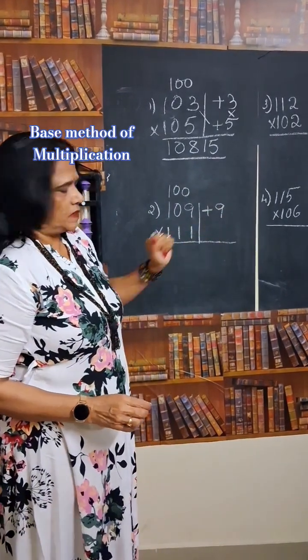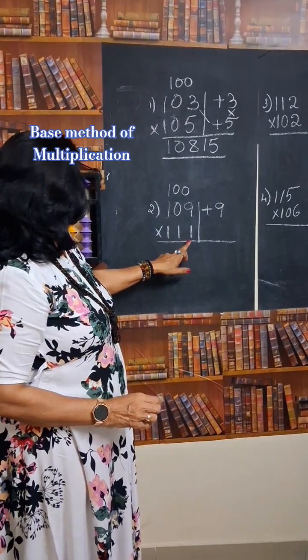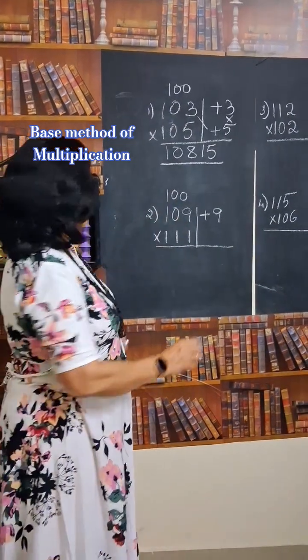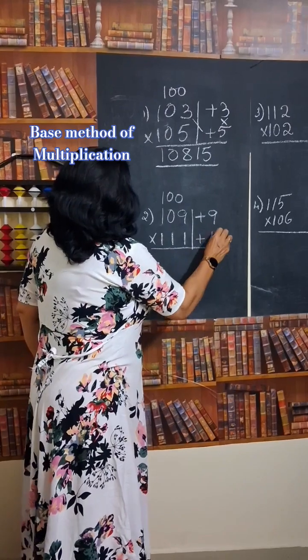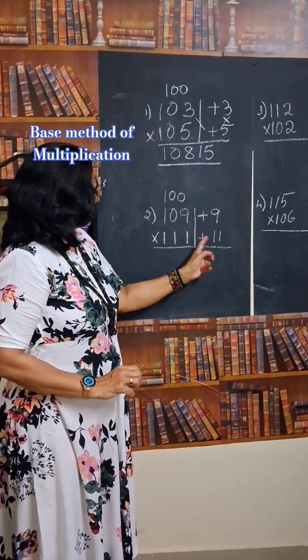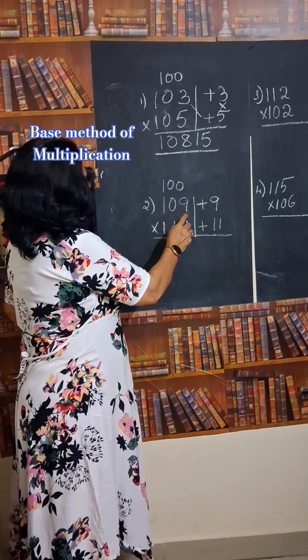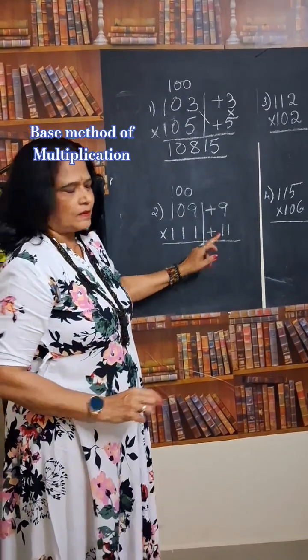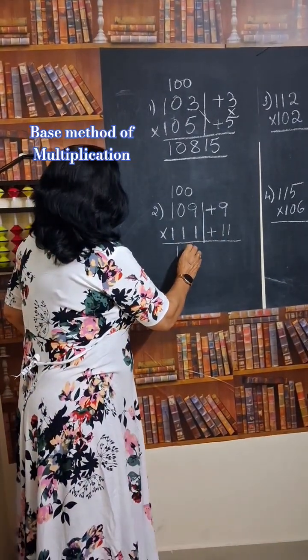111 minus base 100. That will be 11. Now answer is do this cross addition. 109 plus 11 is 120.